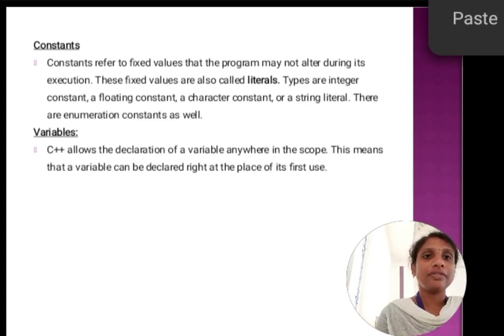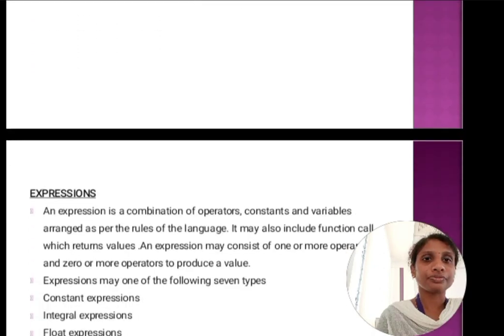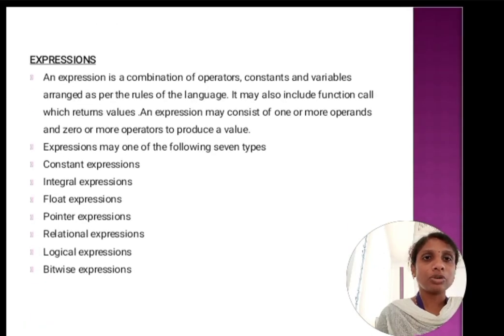Next one is variables. C++ allows a declaration of variables anywhere in the scope. This means the variable can be declared right at the place of its first use.